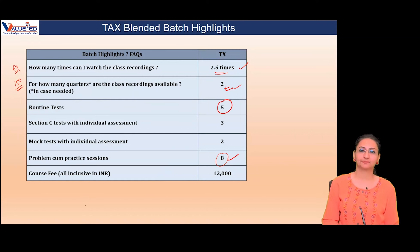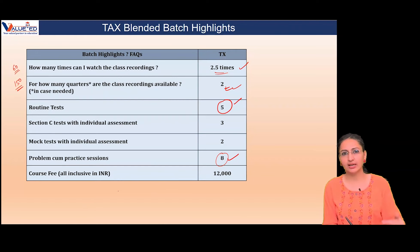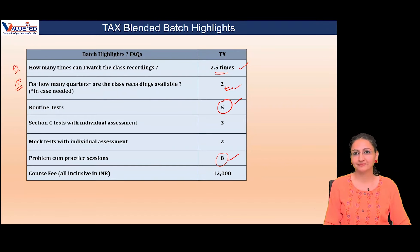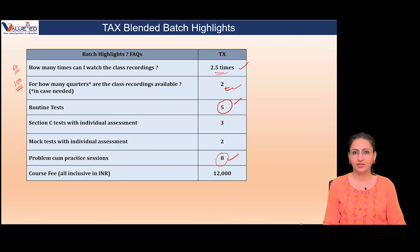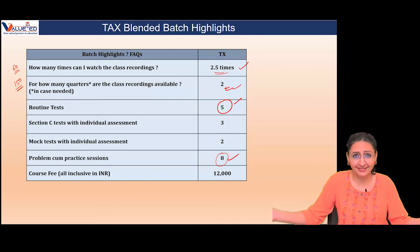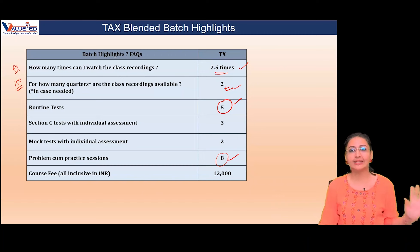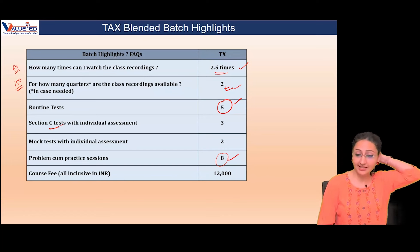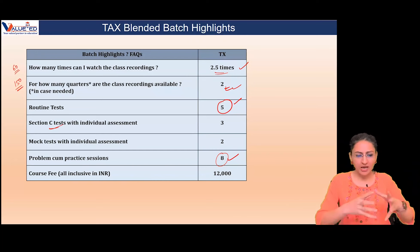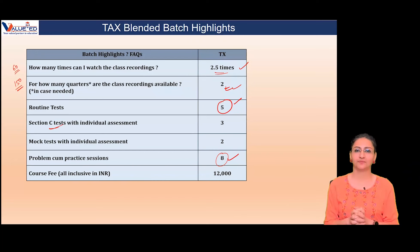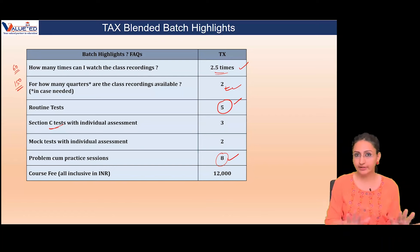Then come your regular tests — Section A and B routine tests. These are 5 to 6 in number; my minimum commitment is 5 but there are 6 uploaded, and if I feel the batch needs it, I'll add a 7th. There's no upper ceiling. Next, Section C tests — the syllabus areas have been divided and you need to give a set of chapters' Section C test so I can see if you're applying correctly, answering within time, and how your presentation is.